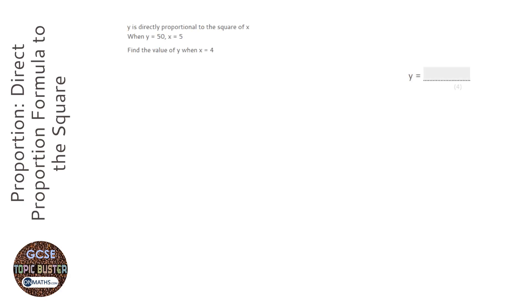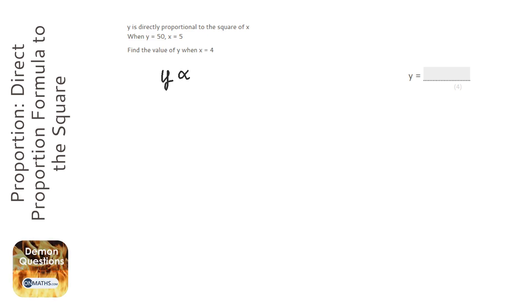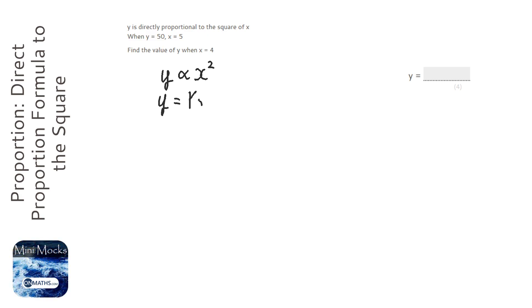This question says y is directly proportional to the square of x. To show proportional, we use this sign here — it looks like a fish. It says that it's proportional to the square of x, so that's going to be x squared. Now to get rid of that fish, or alpha, whatever you choose to call it, what we need to do is introduce a constant, which we call k, on the right-hand side.